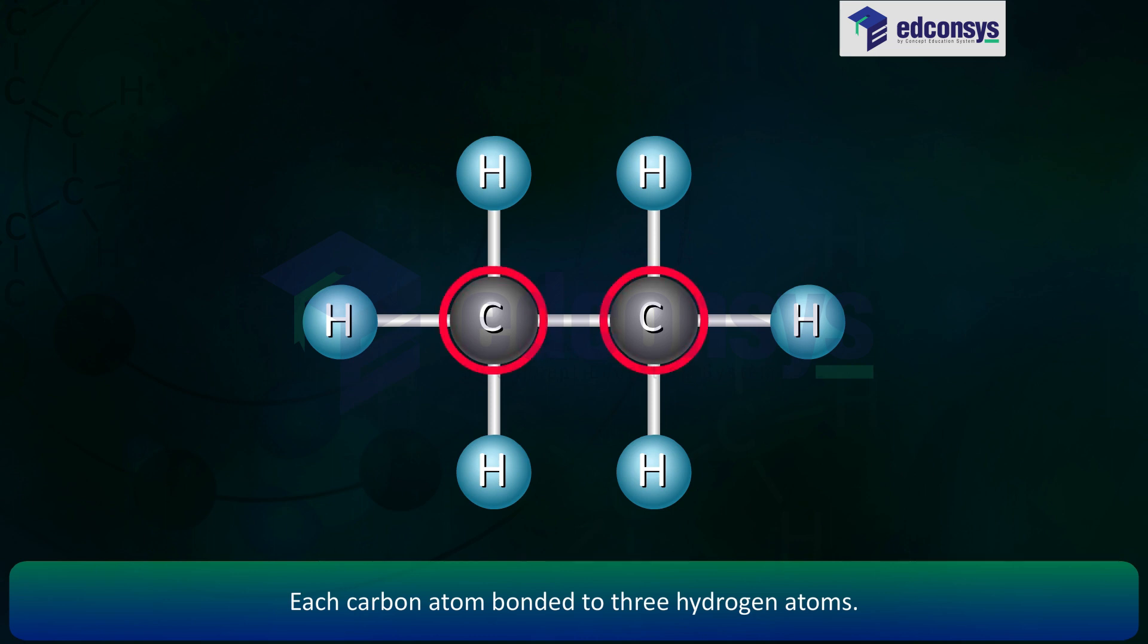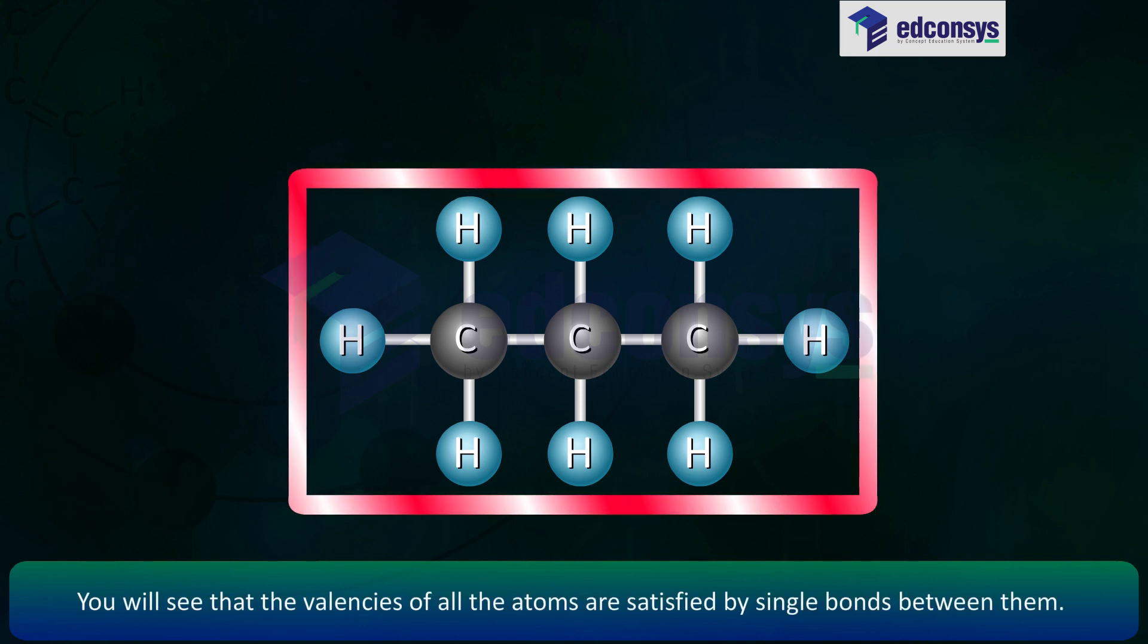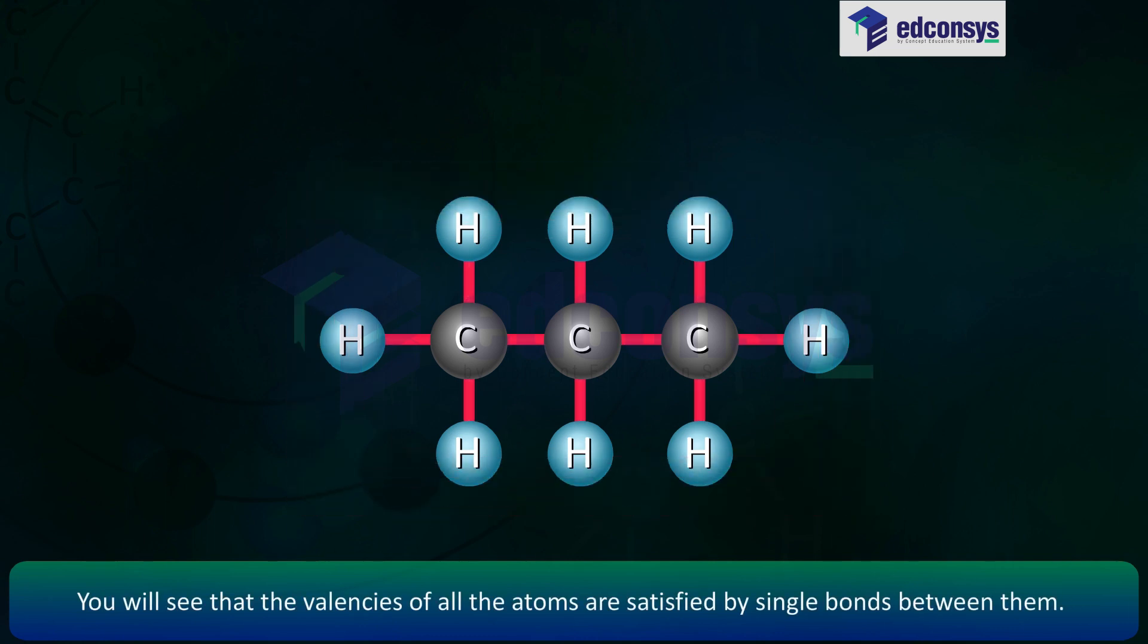Each carbon atom bonded to three hydrogen atoms. Draw the structure of propane, which has the molecular formula C3H8. You will see that the valencies of all the atoms are satisfied by single bonds between them.